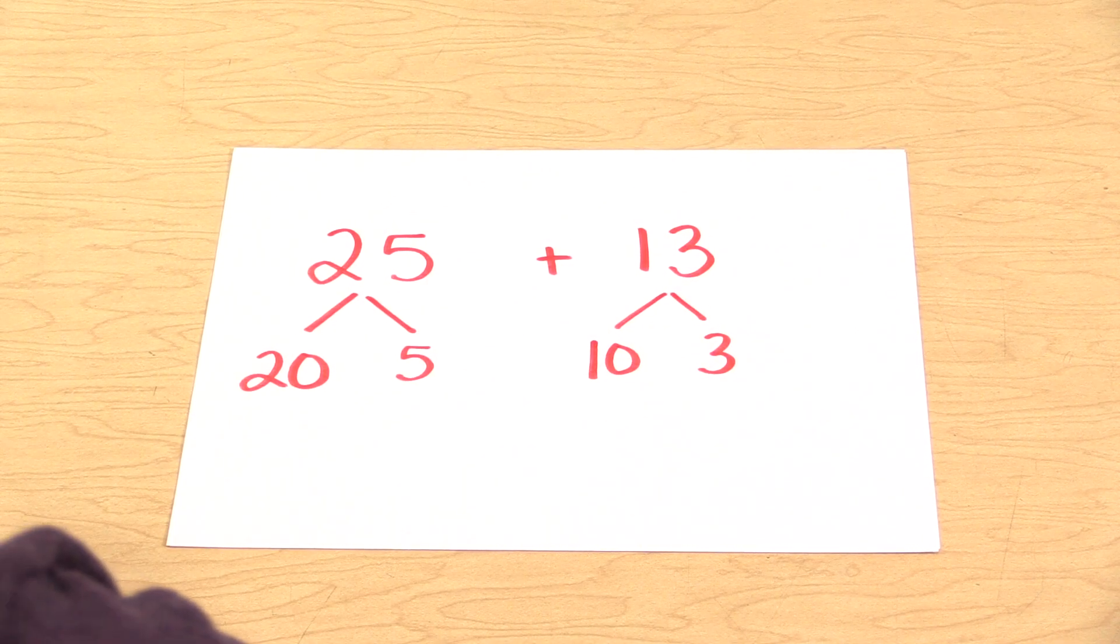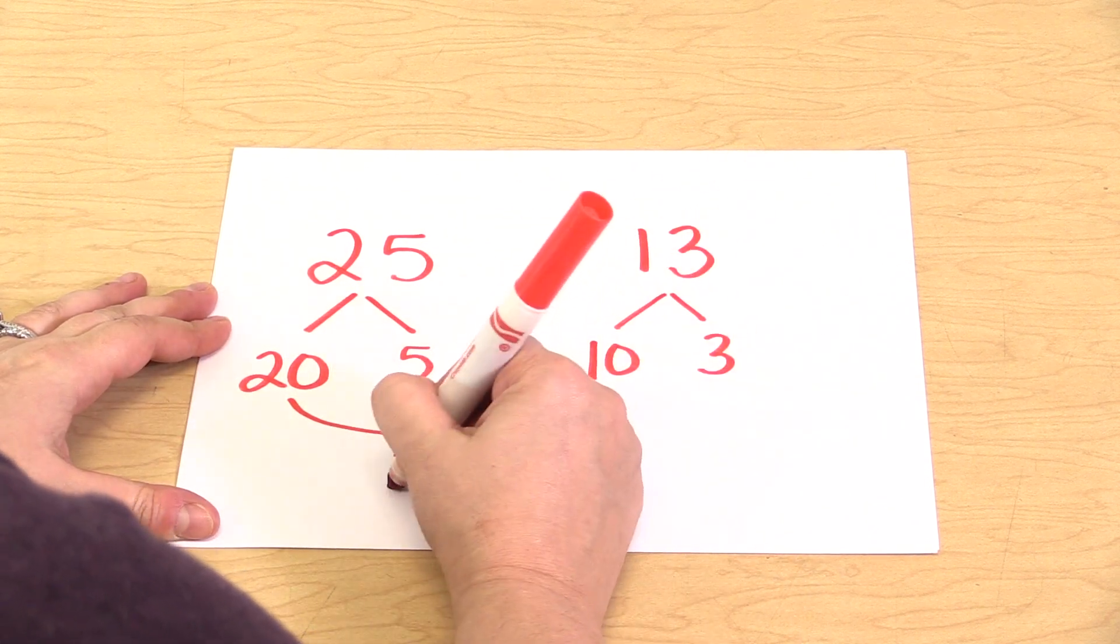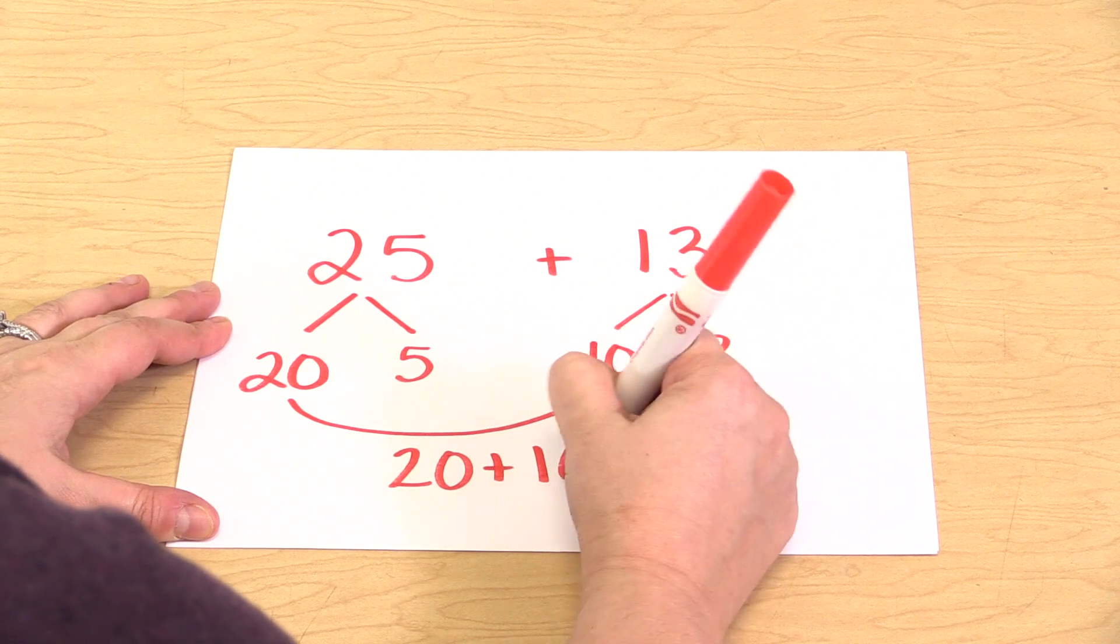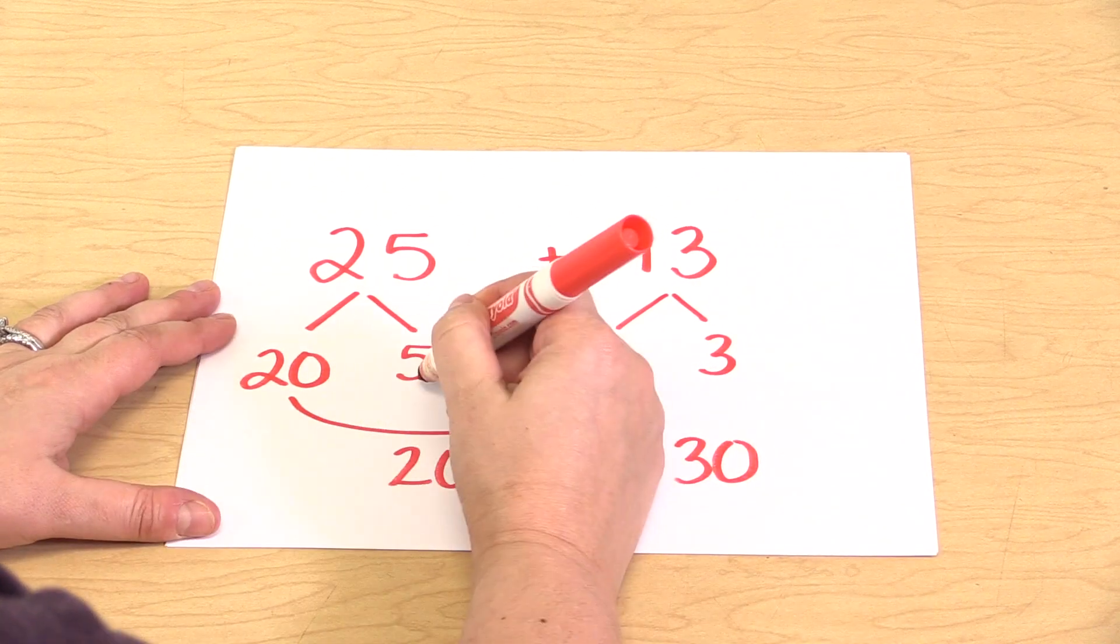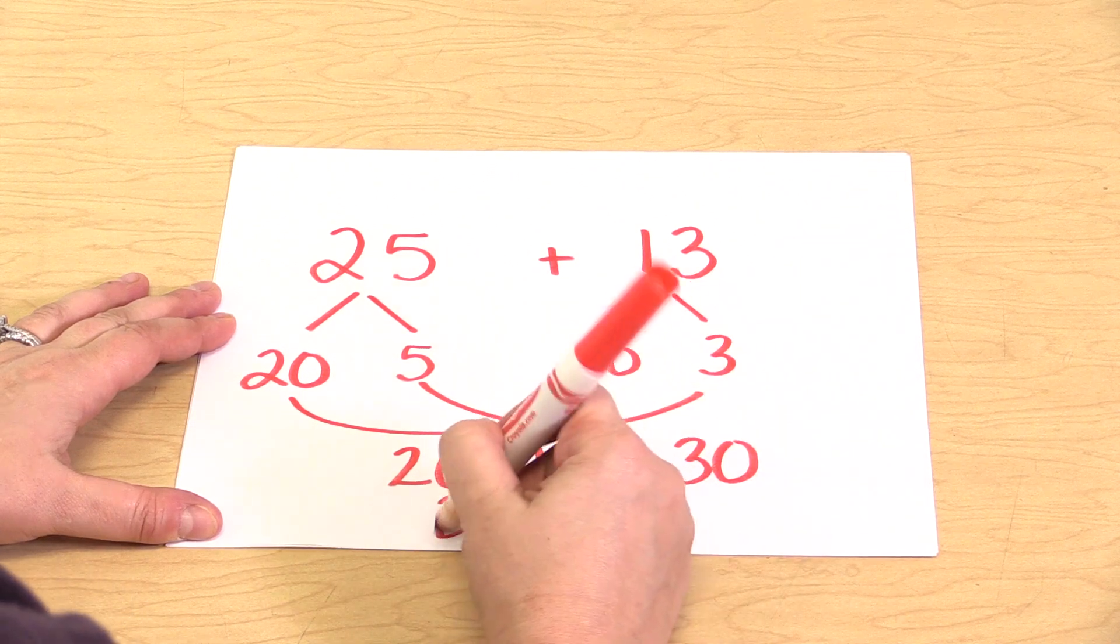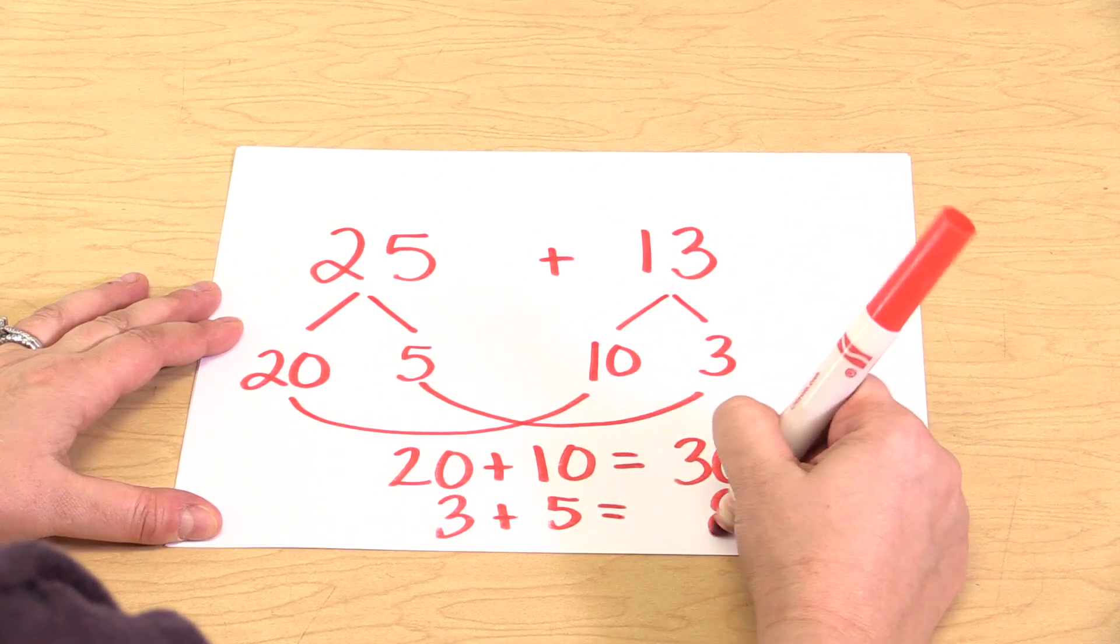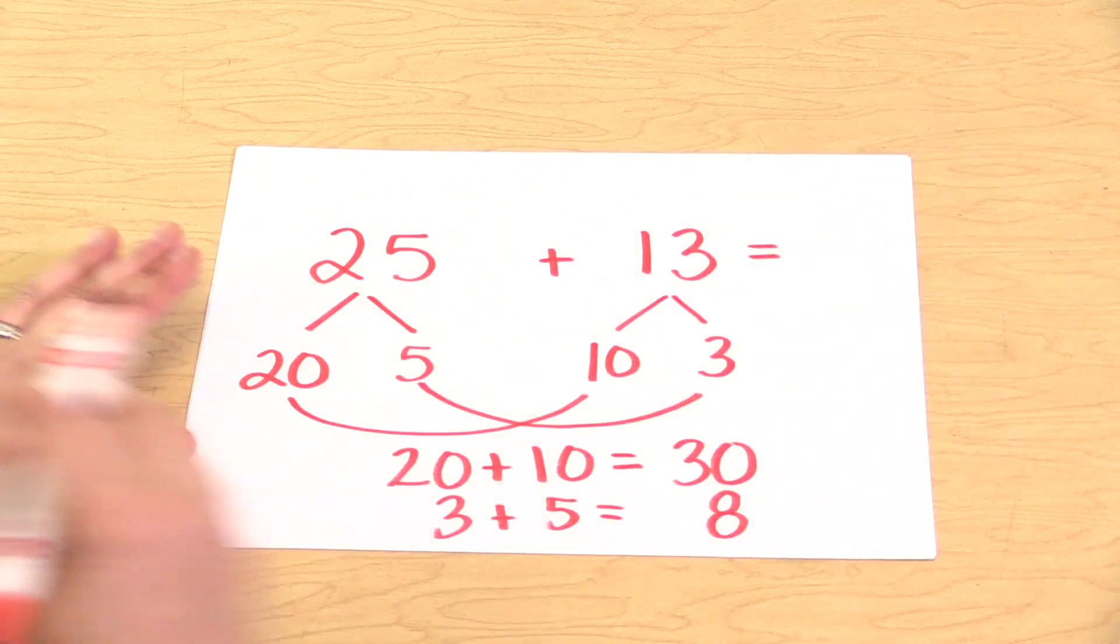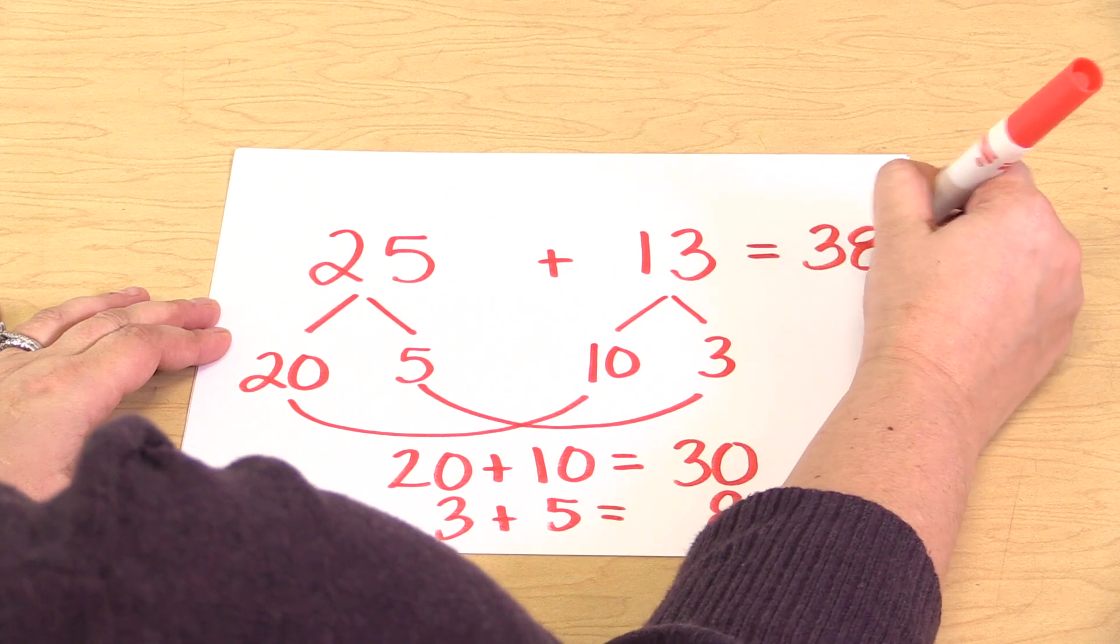And then add together the ones. And then once they put the tens and the ones back together, they would have their answer of 38.